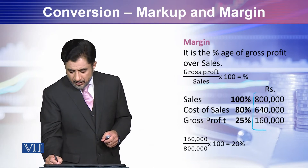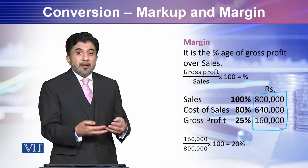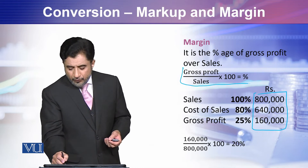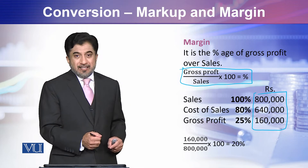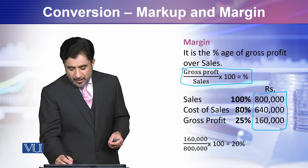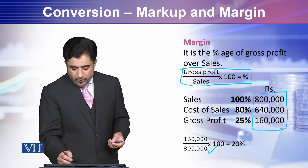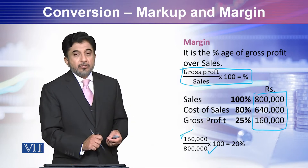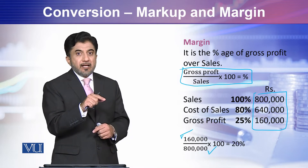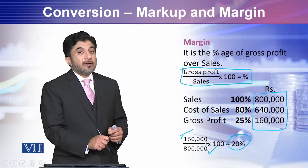Now let's look at margin using the same amounts. For margin, the base will be Sales — remember this. Sales is 800,000, which becomes the denominator, and the numerator is 160,000, which is your Gross Profit. Gross Profit divided by Sales times 100 gives you the margin.